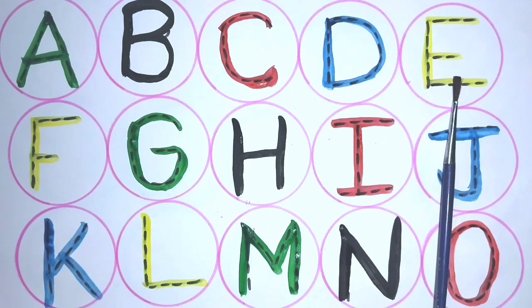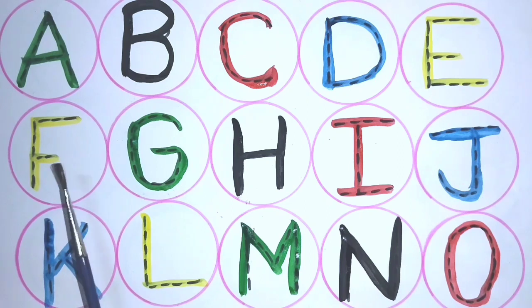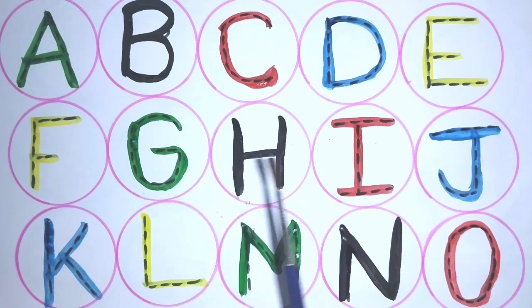E. E for elephant. F. F for fingers. G. G for giraffe. H. H for horse.